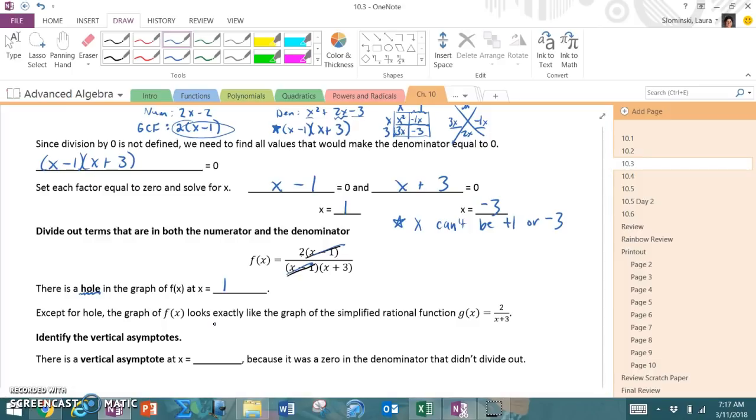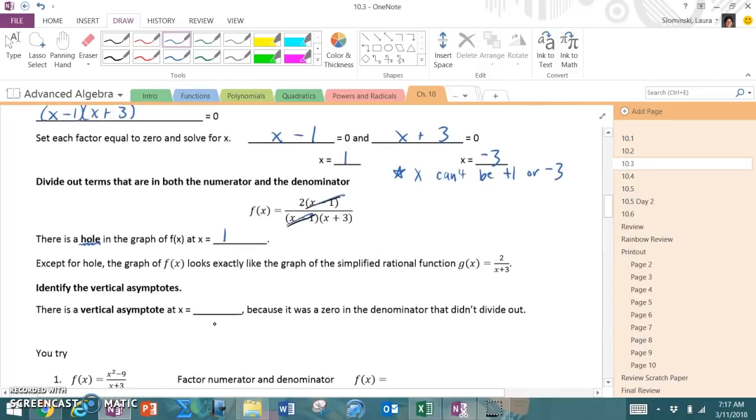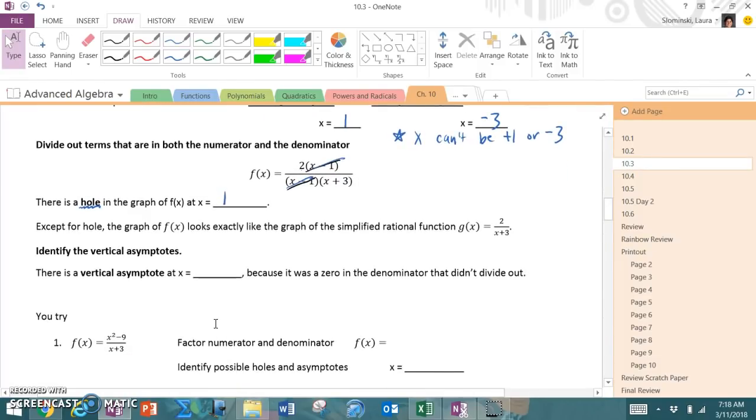And then the second part says, except for the hole, the graph looks exactly like the simplified rational function 2 over x plus 3. So that's what we kind of reviewed at the beginning here. And again, so now because we know the x plus 3 is with the x in the bottom, I just know from what we've done in the past that that's going to shift to 3 left. Which means that vertical asymptote that was at 0 moves to x equals negative 3. And again, we can see that that was the 0 we found of the other factor on the bottom. And because it was a 0 in the bottom, so that is going to be the vertical asymptote because it was a 0 in the denominator that didn't divide out.